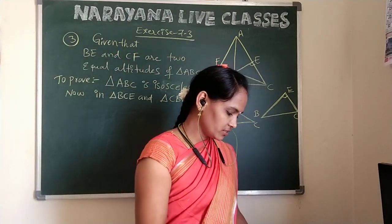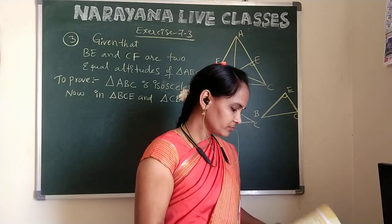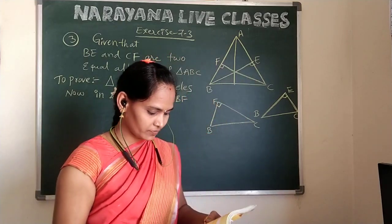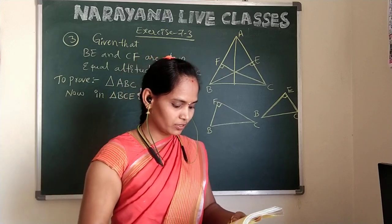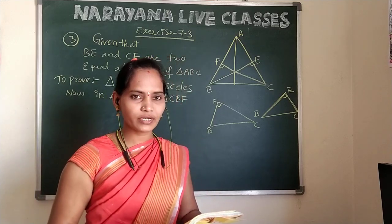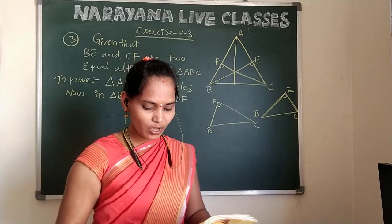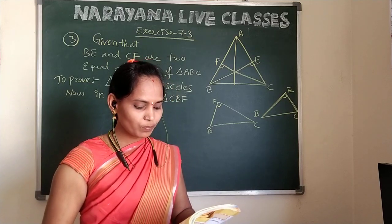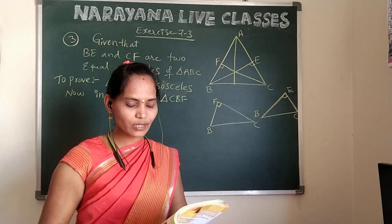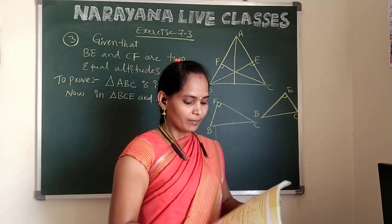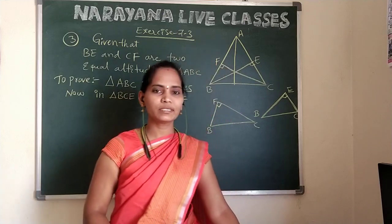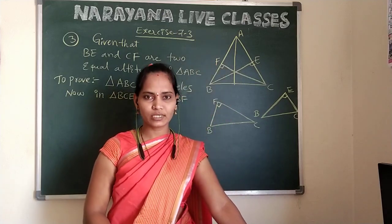Let me read the third question from the textbook. We have BE and CF as two equal altitudes of a triangle ABC. Using the RHS congruency rule, prove that triangle ABC is an isosceles triangle. By the RHS congruency rule, we can prove that triangle ABC is an isosceles triangle.